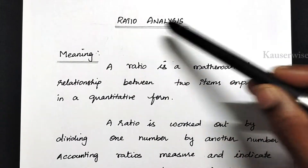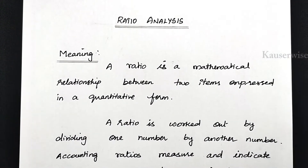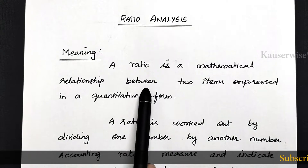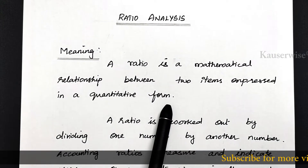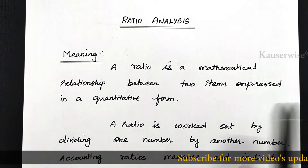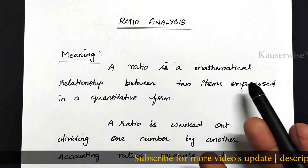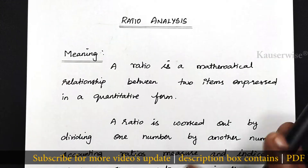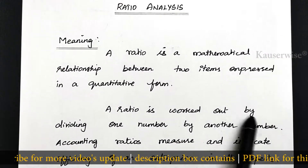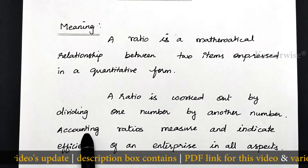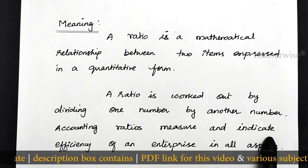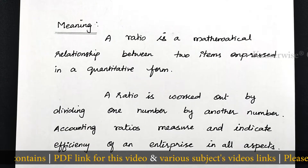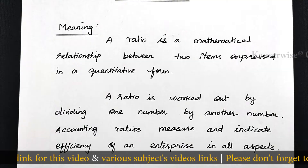Before we see the numerical problem on ratio analysis, let us try to understand the basic concepts. What is the meaning of ratio? A ratio is a mathematical relationship between two items expressed in a quantitative form. Ratio analysis involves the process of computing, determining and presenting the relationship of items and group of items of financial statements. A ratio is worked out by dividing one number by another number. Accounting ratios measure and indicate the efficiency of an enterprise in all aspects. Ratio analysis is a tool to analyze and interpret the financial statement.